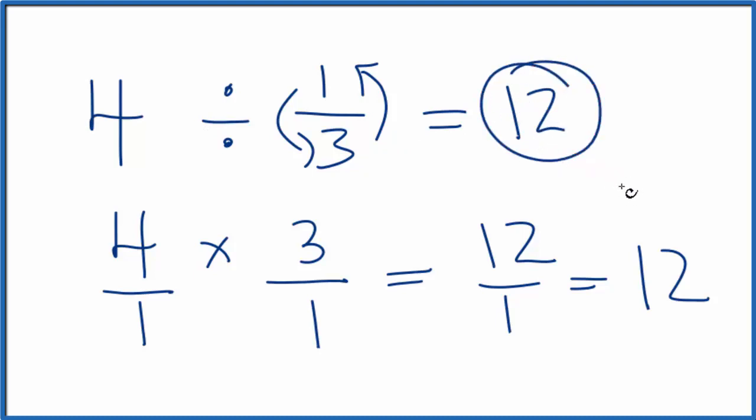This is Dr. B answering the question, how do you divide four by one-third? You first change it to multiplication, take the reciprocal of the fraction here, and that will give you your answer. Thanks for watching.